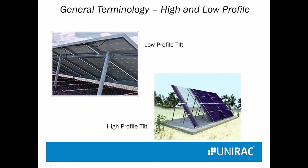This applies also with a tilt module. Low profile, the modules are one at a time, usually portrait, and the rails are running east-west. High profile is actually three separate arrays put together so it looks like one continuous plane, but the rails are running north-south, with the modules landscape across them.